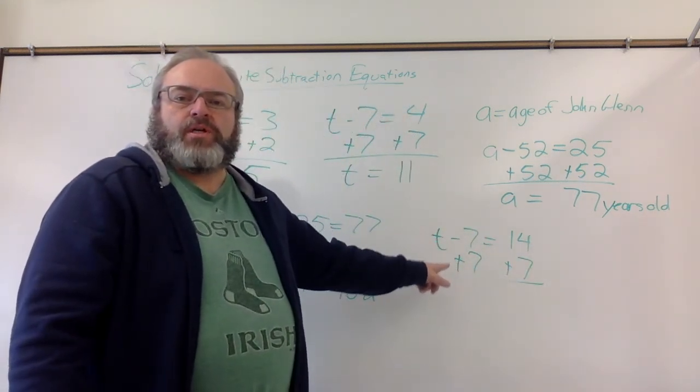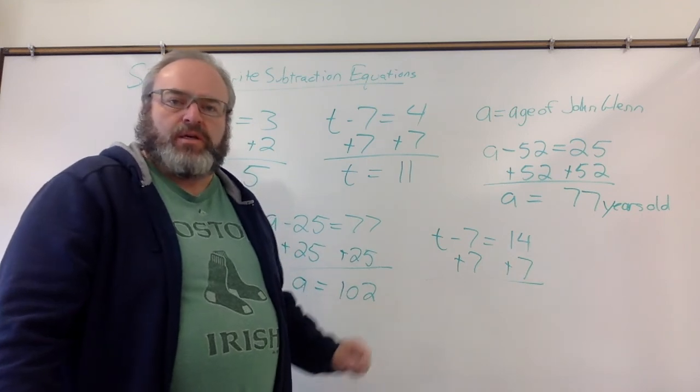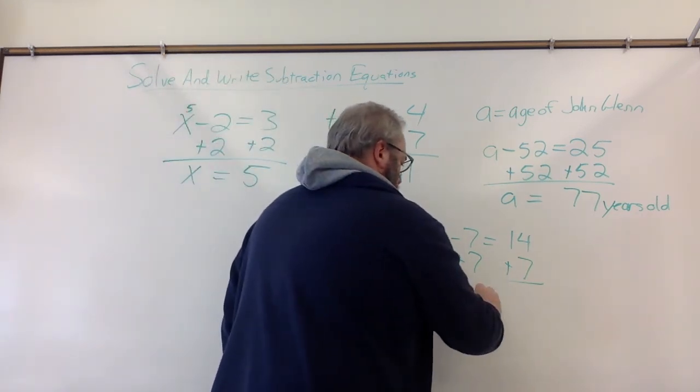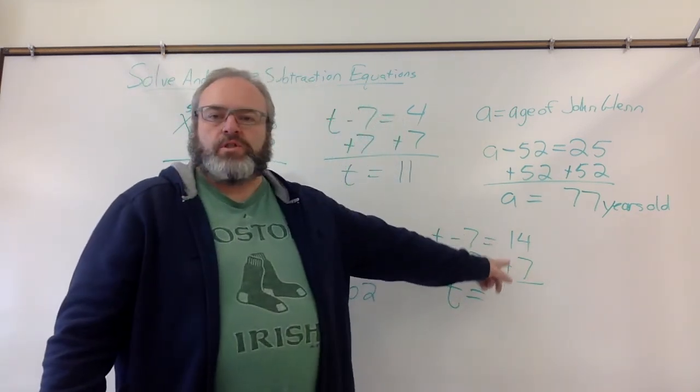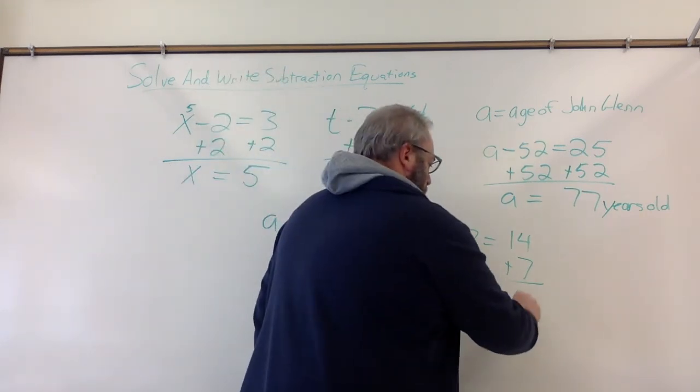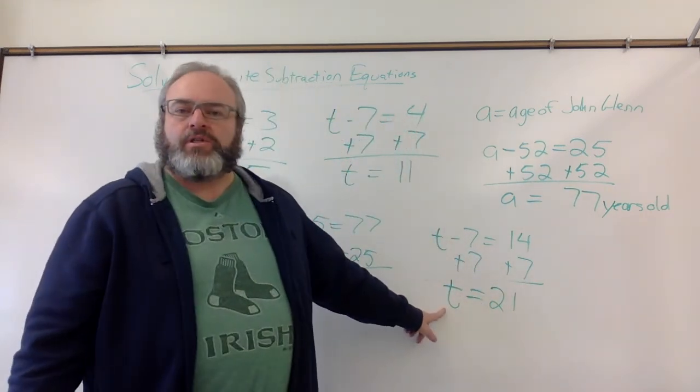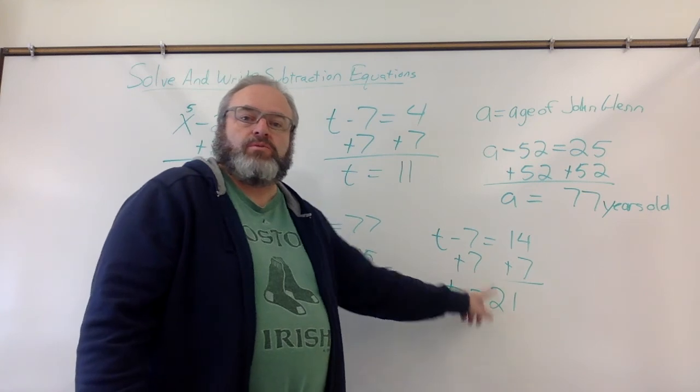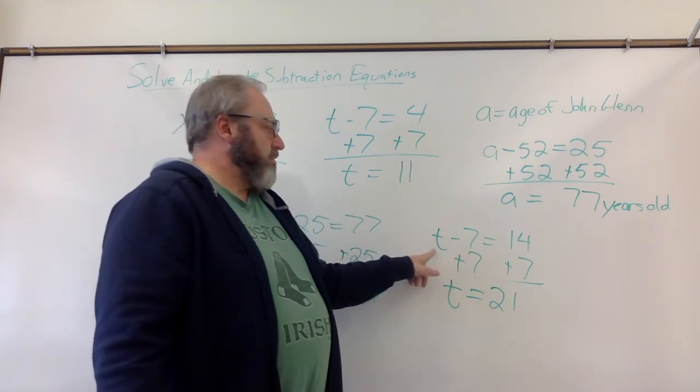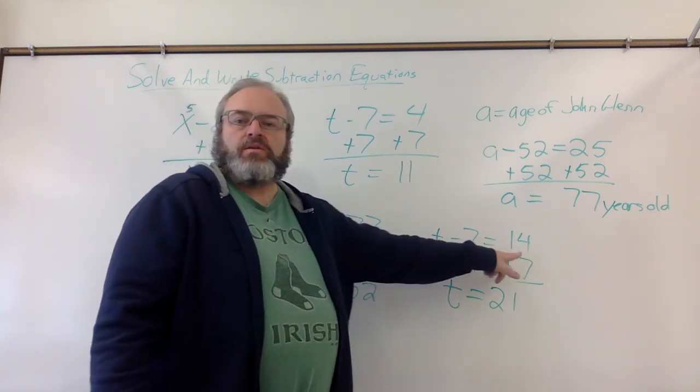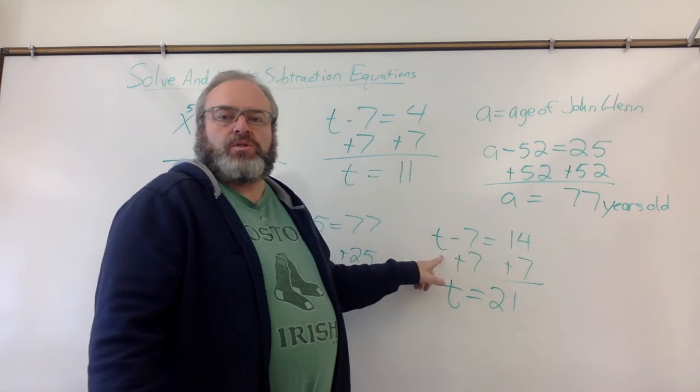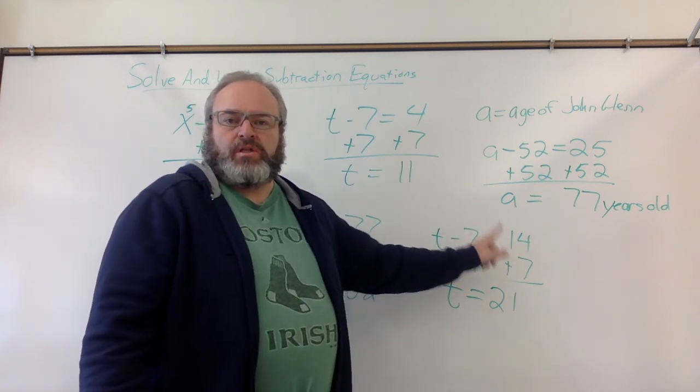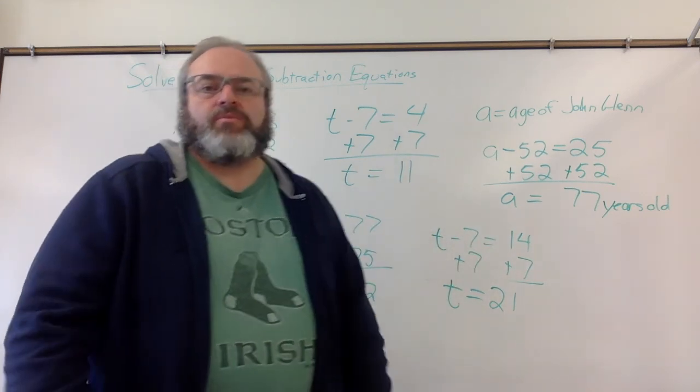What happens to the minus 7 and the plus 7? They cancel out. 14 plus 7 is 21. How do we check it? We can plug the 21 back in for T and make sure that our left side equals our right side. Is 21 minus 7, 14? Yes, it is. We've done that problem correctly.